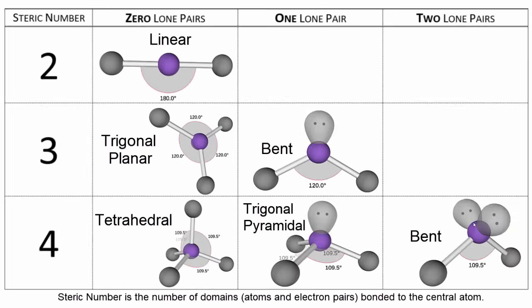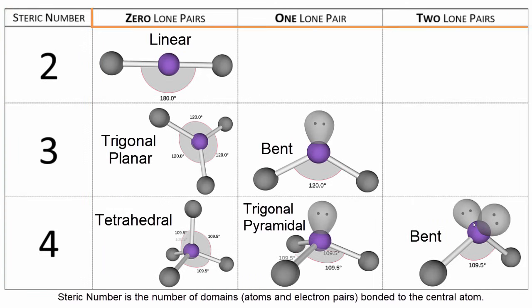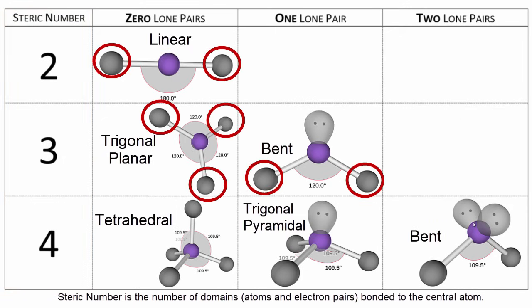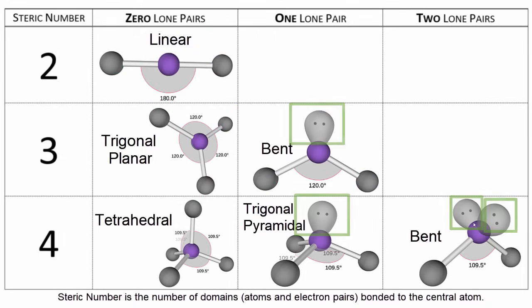Back to our chart, it's organized by steric number and by the number of lone pair electrons. The steric number is the number of things attached to that central atom — that can be atoms, or it can be lone pair electrons, also called unbonded electron pairs. We use the steric number, along with the number of lone pairs, to figure out the molecular geometry of the molecule.